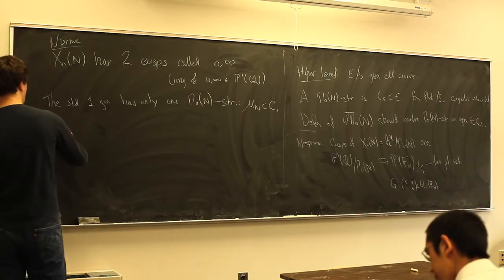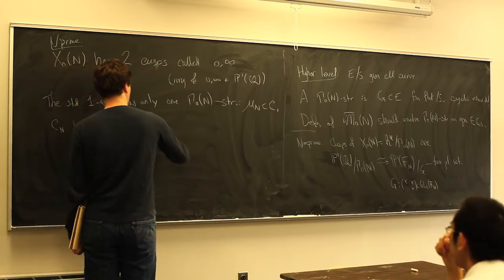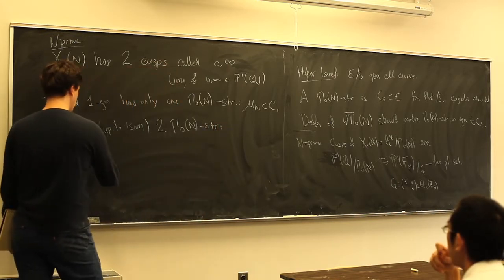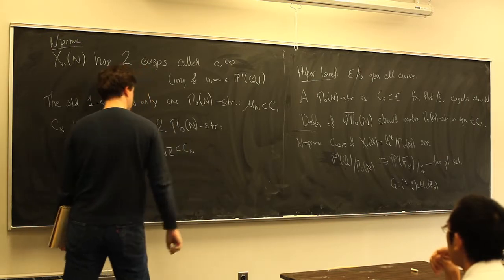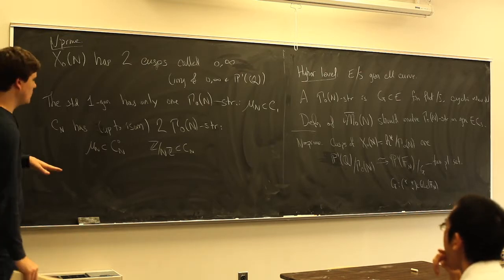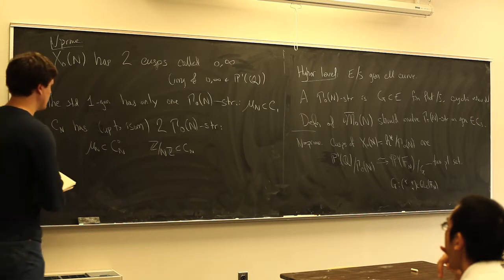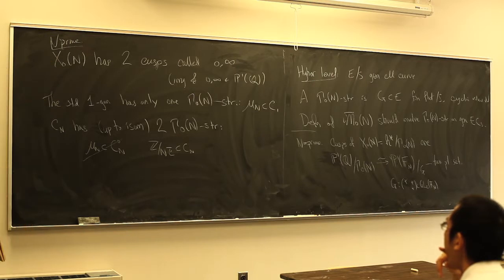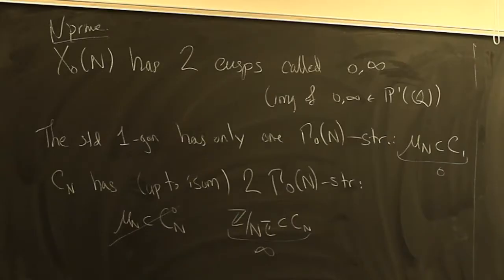C_n has two Γ₀(n) structures up to isomorphism: μ_n sitting inside the identity component, and Z/nZ. For technical reasons, you want your level structure to hit every irreducible component. So you don't want to allow μ_n since it doesn't hit each component. Z/nZ hitting every component will be the cusp ∞, and the other will be the cusp 0.